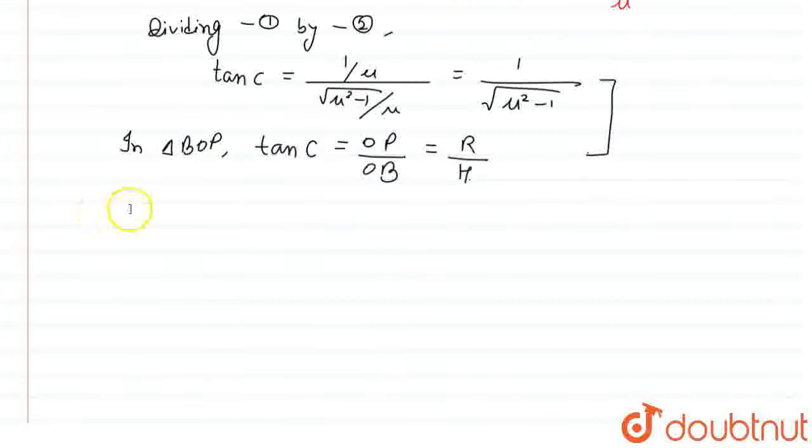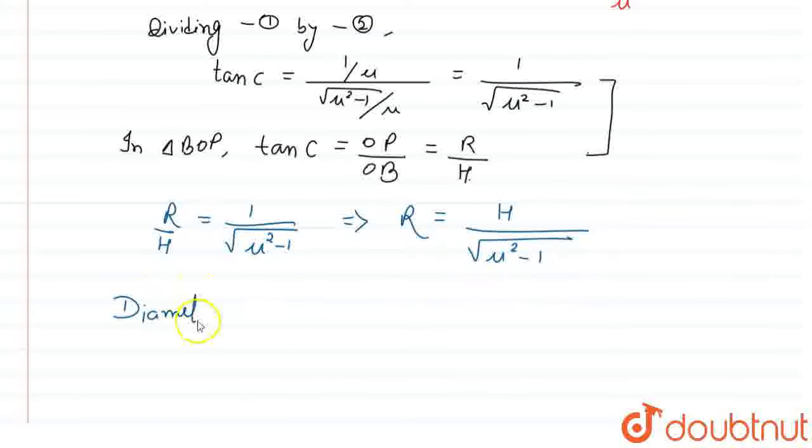So, on comparing both these expressions that we have got, we get R by h is equal to 1 by root of mu square minus 1. This gives us the expression of radius as h by root of mu square minus 1, and the diameter will be 2 times the radius, which is 2h by root of mu square minus 1.